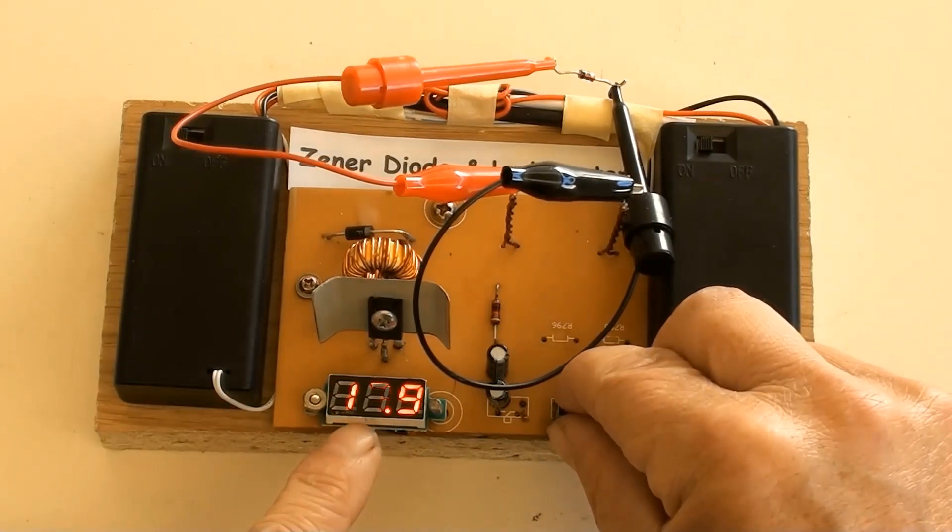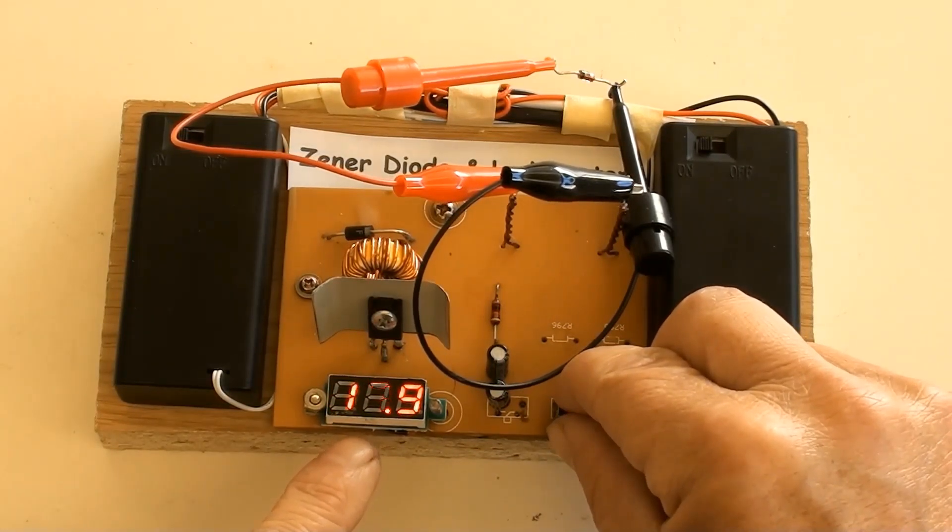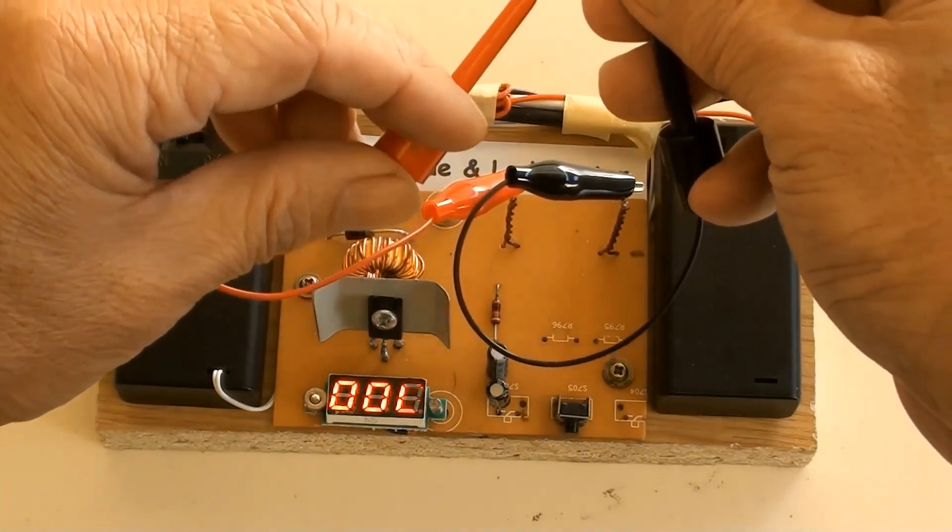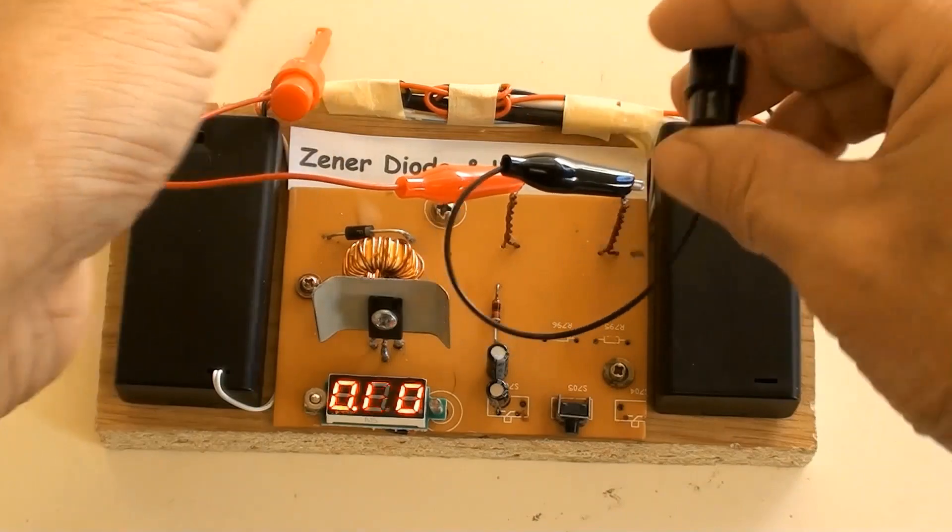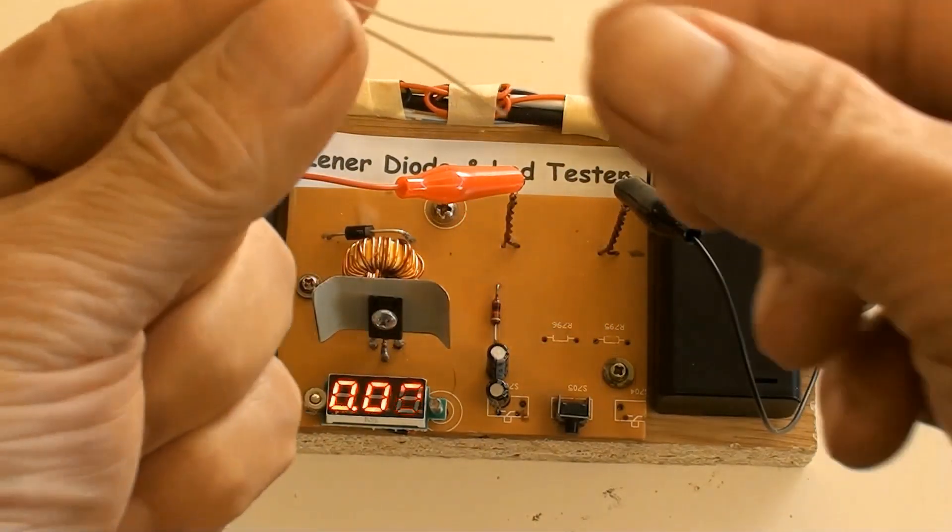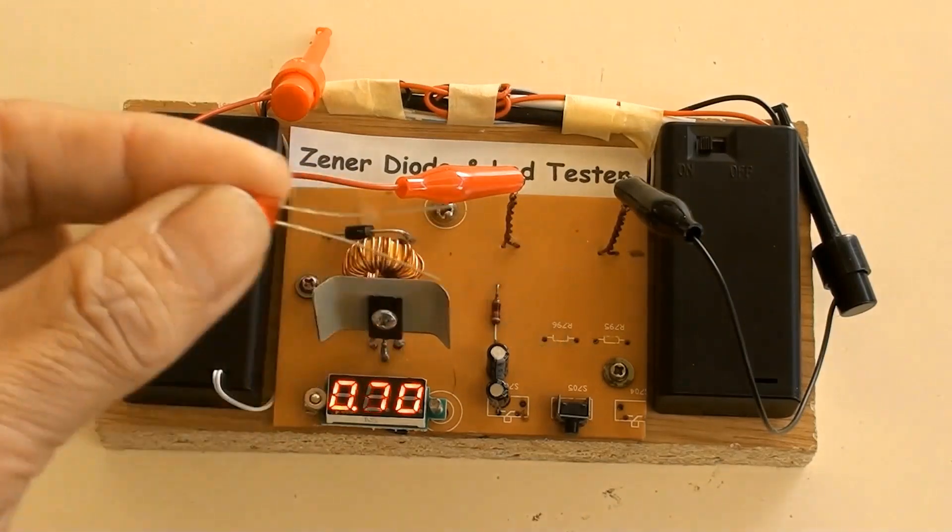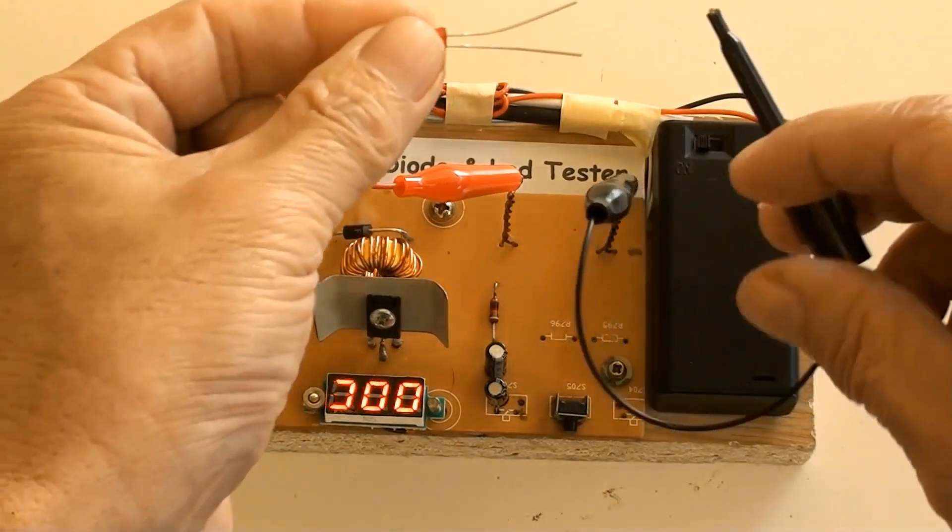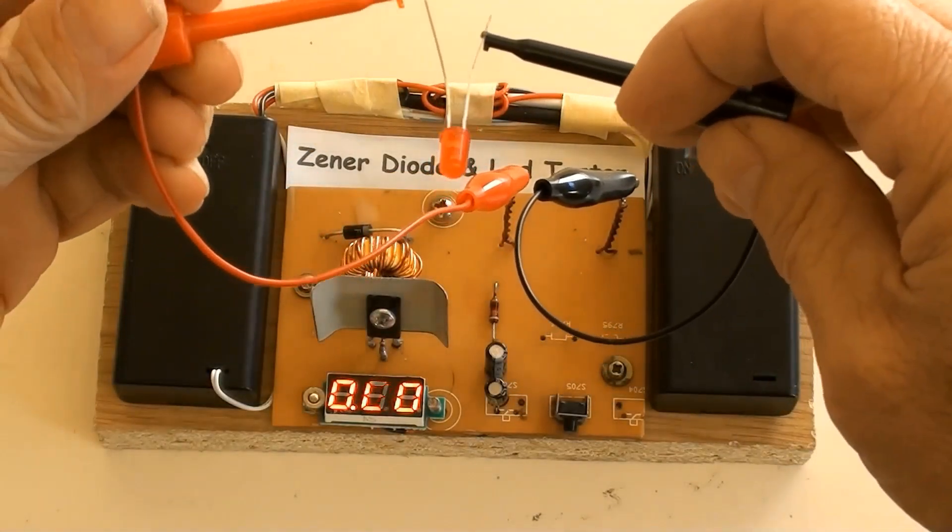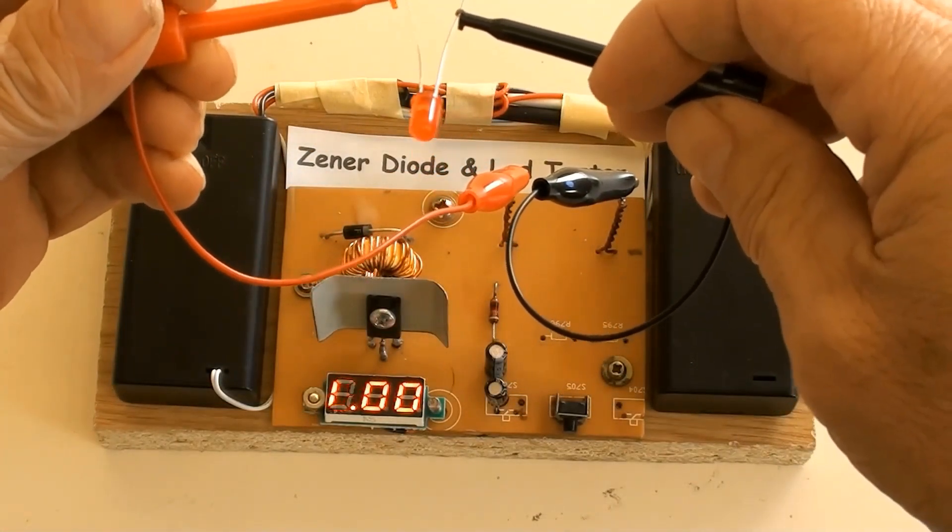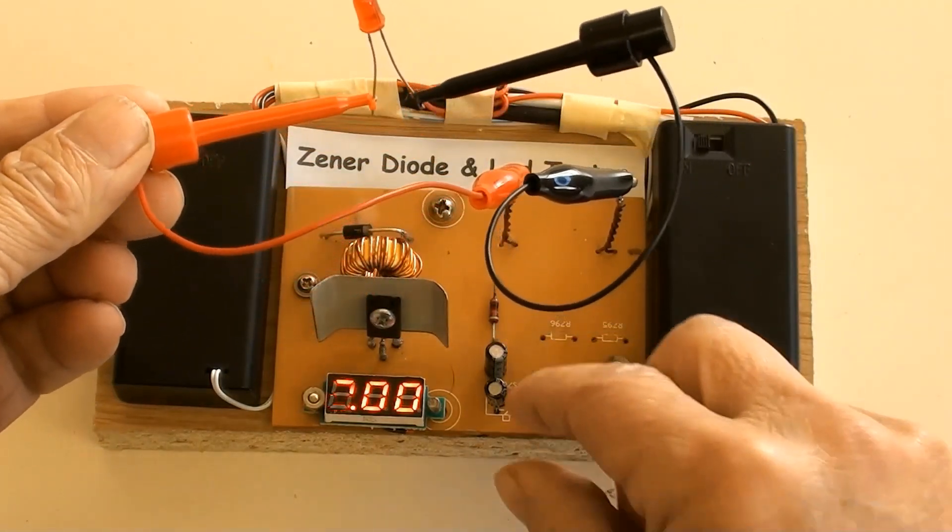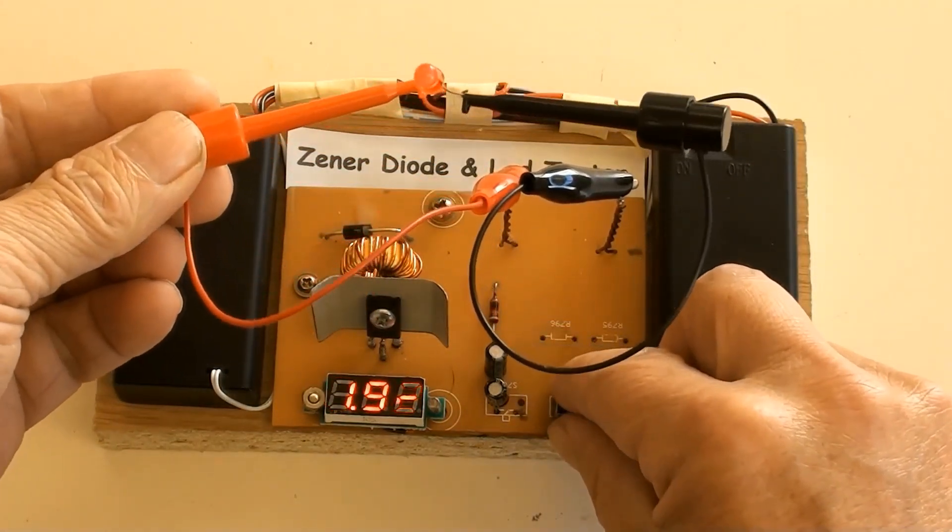It showed 18 volt. So this is an 18 volt Zener diode.